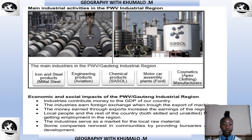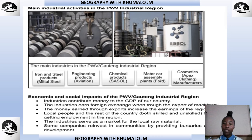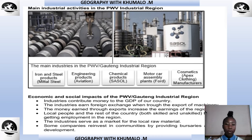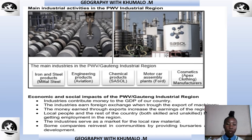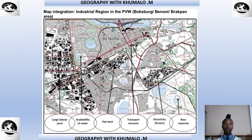Economic and social impacts of the PWV Gauteng industrial region: industries contribute money to the GDP of our country, and earn foreign exchange through the export of machinery. Exports increase the earnings of the region. Local people and the rest of the country — both skilled and unskilled — get employment in the region. The industry also serves as a market for local raw materials.